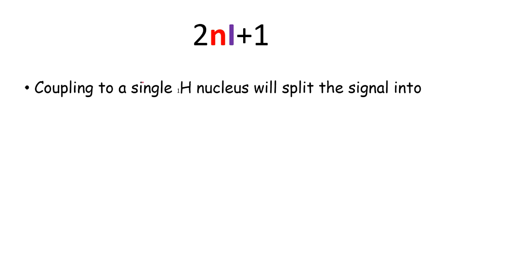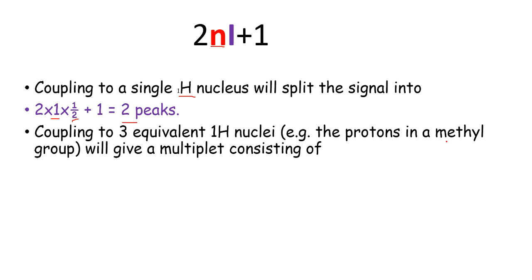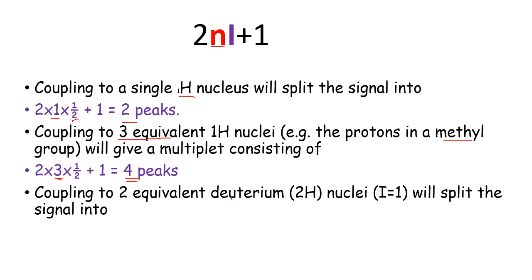For a single H1 nucleus, applying 2NI+1 gives the number of peaks. For methyl groups having 3 equivalent H1 nuclei, in the place of N we substitute 3 and we get a value of 4 peaks.